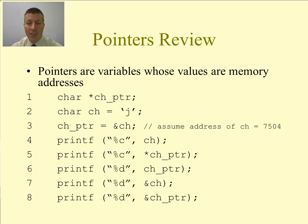On line 5, I print out the character which is the dereference value of CH Pointer. So it is going to go to that address, get 7504 out, goes to 7504, grabs the value out of it. In this case, it's going to be J. On line 6, it prints out whatever is stored in CH Pointer. In this case, it's the address of CH, and as I've said, it's 7504.